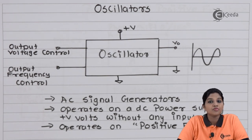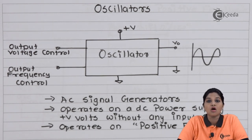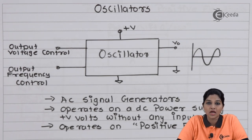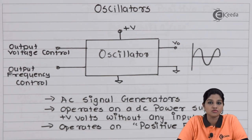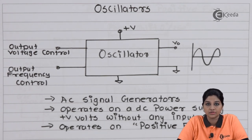An oscillator produces an output waveform as a sine wave which can have a variable frequency and variable magnitude, or else we can produce a sine wave of fixed magnitude and fixed frequency by using an oscillator. So let's first understand the basic block diagram of an oscillator.